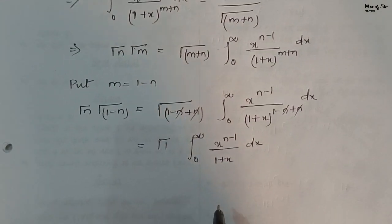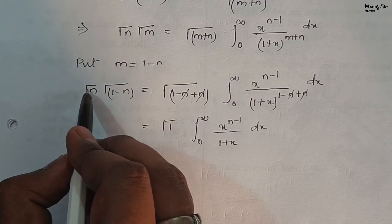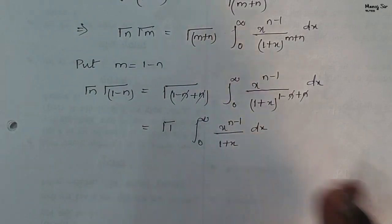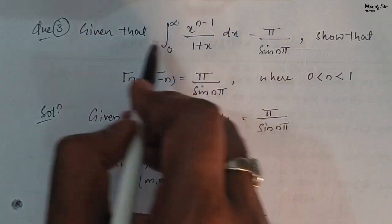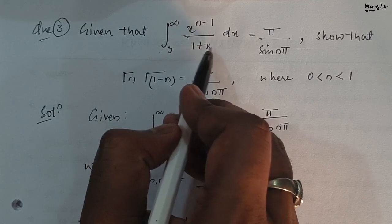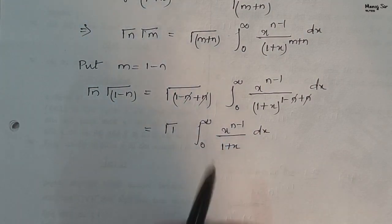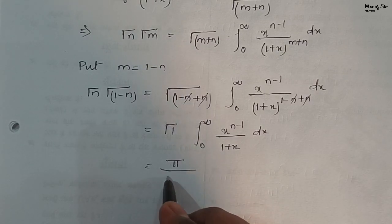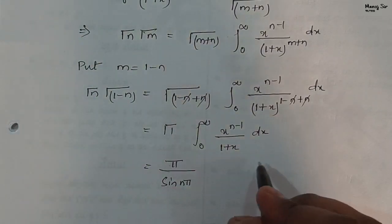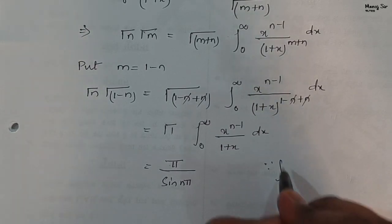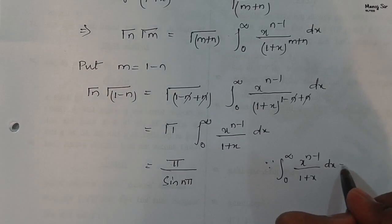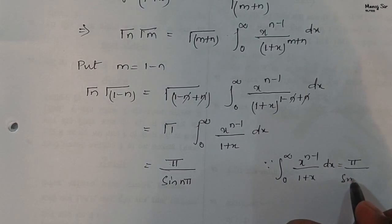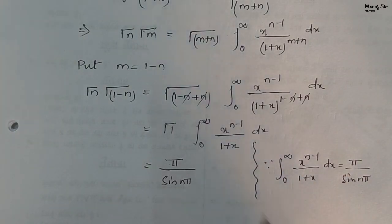Putting gamma(1) equals 1, we get gamma(n) gamma(1 minus n) equals the integration from 0 to infinity of x to the power n minus 1 upon 1 plus x dx. Since it is given in the problem that this integration equals pi upon sin(nπ), we can say this equals pi upon sin(nπ).